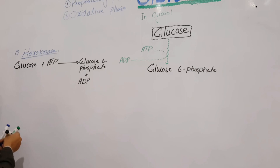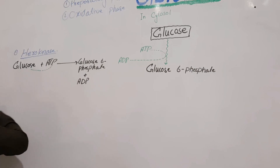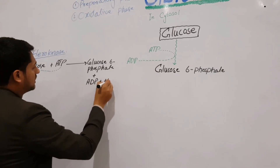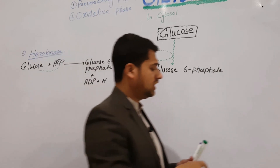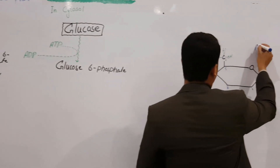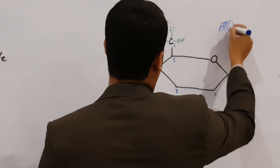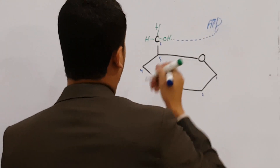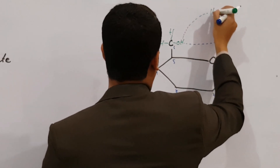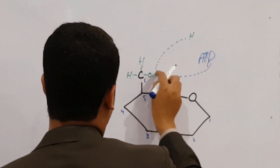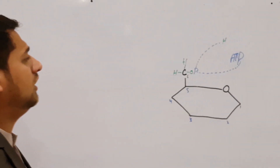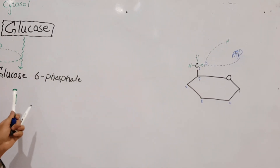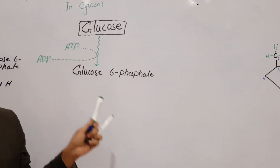The phosphate from ATP combines with glucose. The hydrogen from the hydroxyl group at carbon six is released, and the phosphate attaches at carbon number six — that's why this molecule is named glucose-6-phosphate. This is step number one.